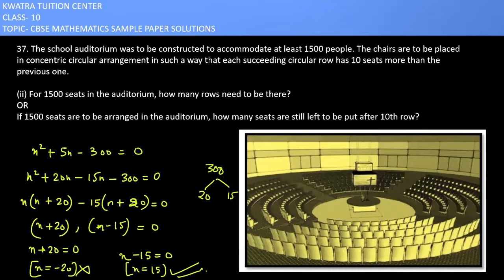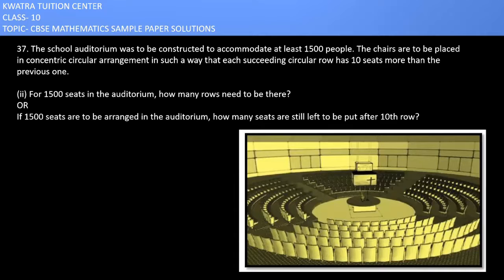Now the third part. It says 1500 seats are to be arranged in the auditorium, how many seats are still left to be put after 10th row? We have to find how many seats are left to be added.